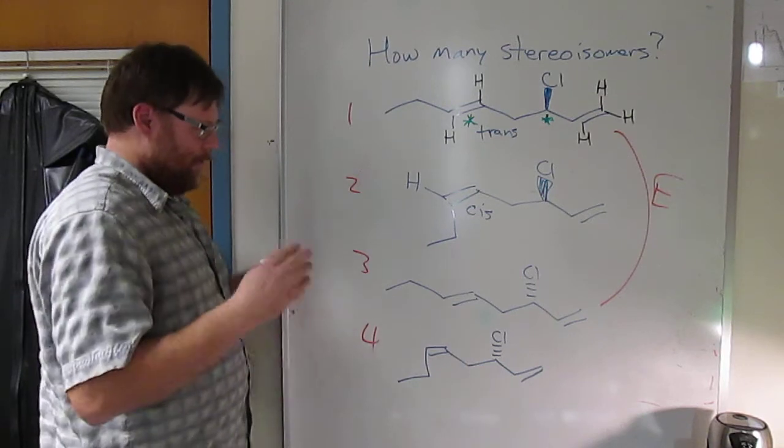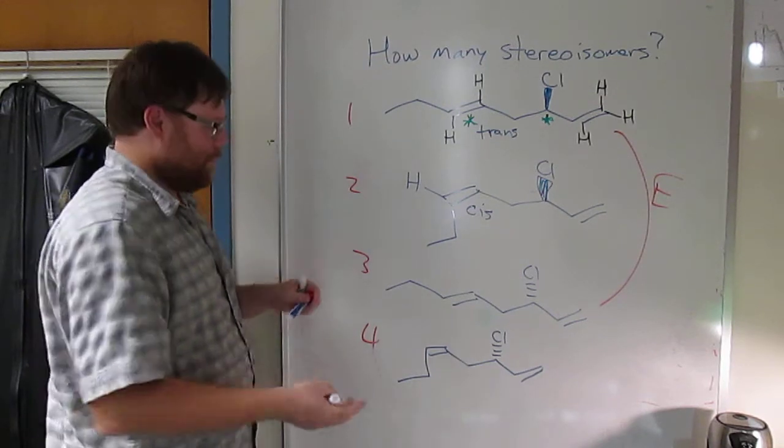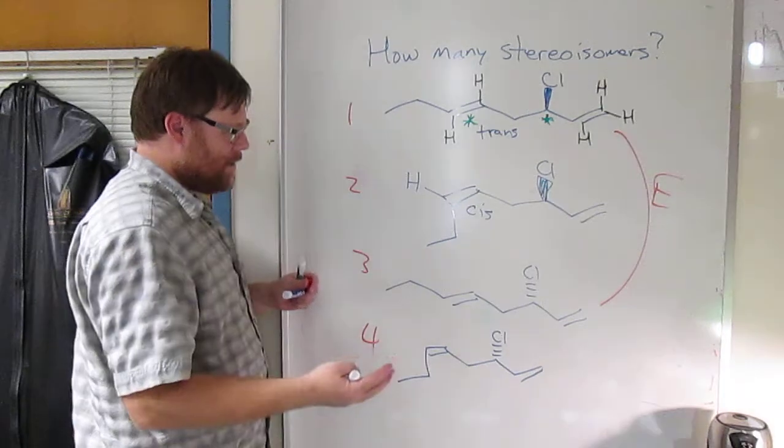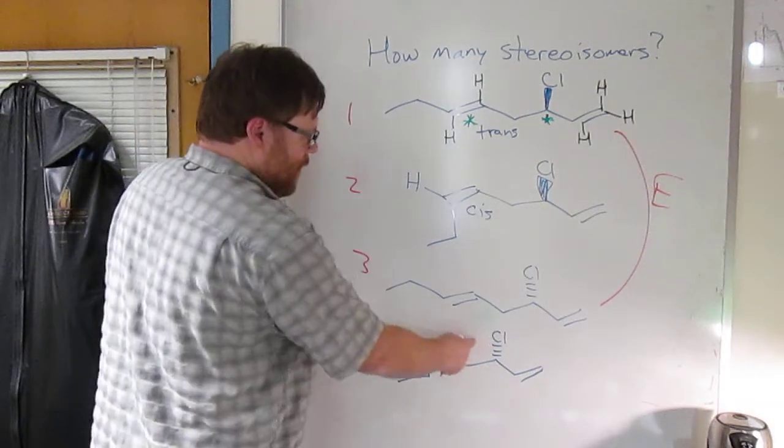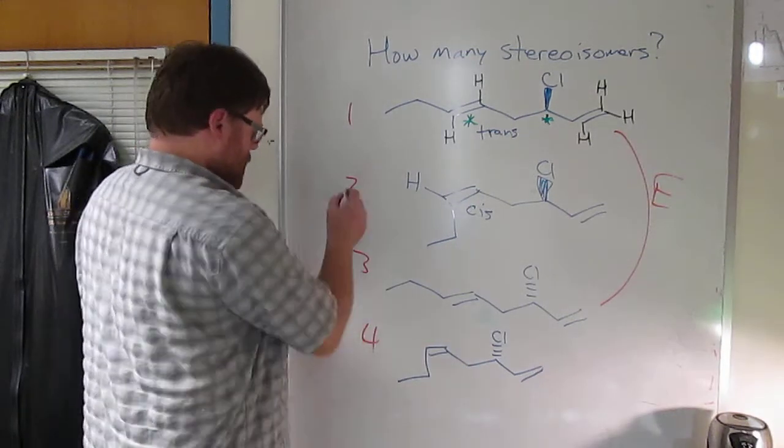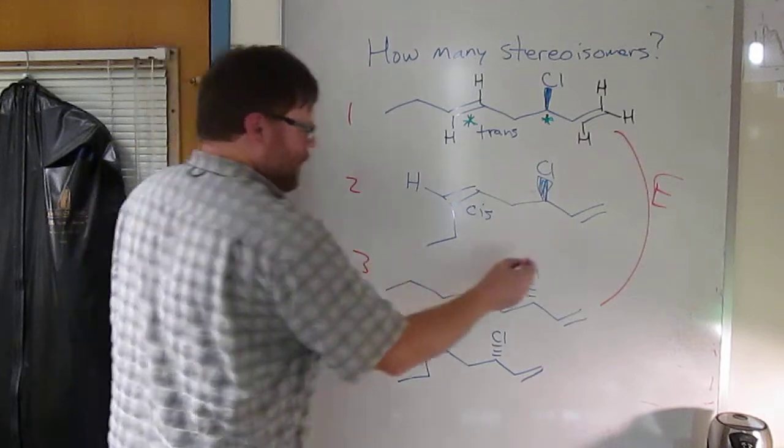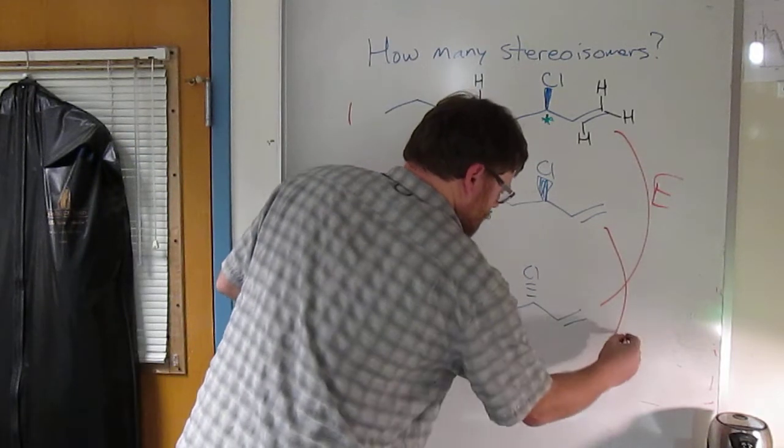So again, if two structures are exactly the same, two and four are exactly the same except for the configuration of the chiral center. So two and four are enantiomers as well.